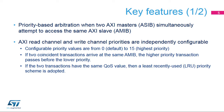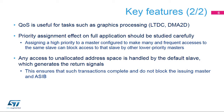The AXI switch matrix uses priority-based arbitration when two ASIBs simultaneously attempt to access the same AMIBS. Each ASIB has programmable read-channel and write-channel priorities, known as QoS, from 0 to 15, such that the higher the value, the higher the priority. If two coincident transactions arrive at the same AMIBS, the higher priority transaction passes first. If the two transactions have the same QoS value, a least recently used, or LRU, priority scheme is adopted. The QoS value should be programmed according to the latency requirements for the application, and setting a higher priority for an ASIB ensures lower latency for transactions initiated by the associated bus master.